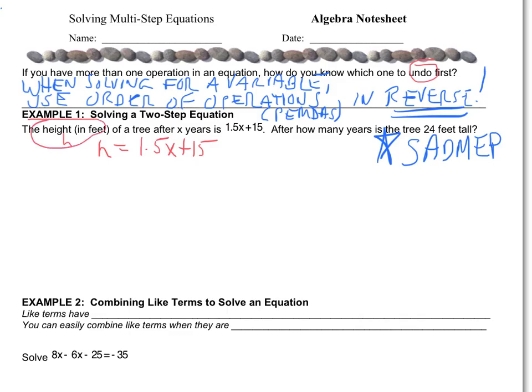Now what we want to do is look at what we want to know — after how many years. Years was referring to our X's, so we're looking for X. We want to know how many years the tree is 24 feet tall. Well, 24 is our height. So we plug in 24 for H, because H represents the height. Now I have the equation with one variable, and once I have only one variable, I can solve. This is where we have to start thinking of SADMEP.